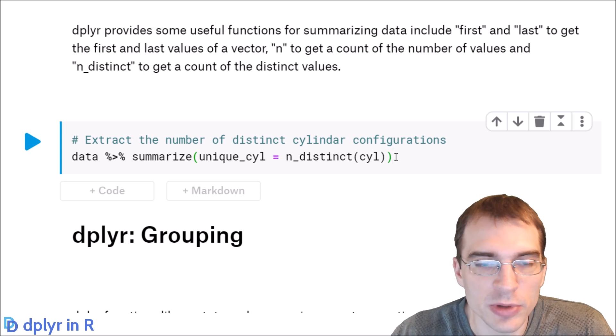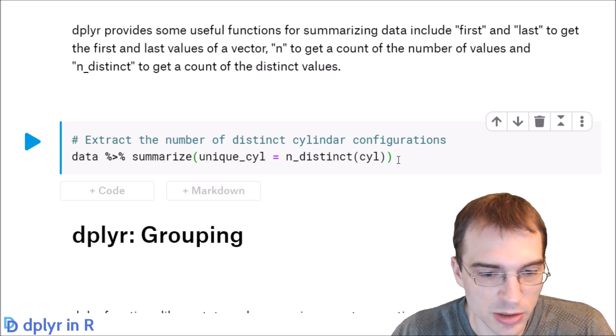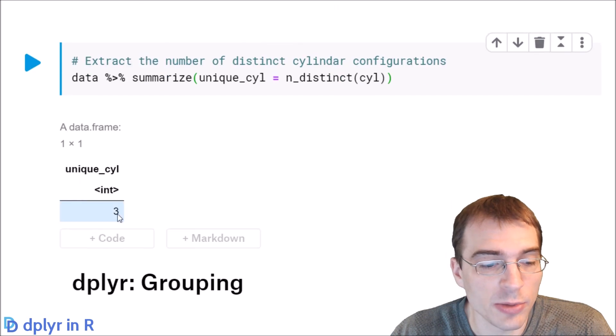We know that there's probably going to be three because cars generally have four, six, or eight cylinders. As expected, there are three different cylinder configurations for these cars.